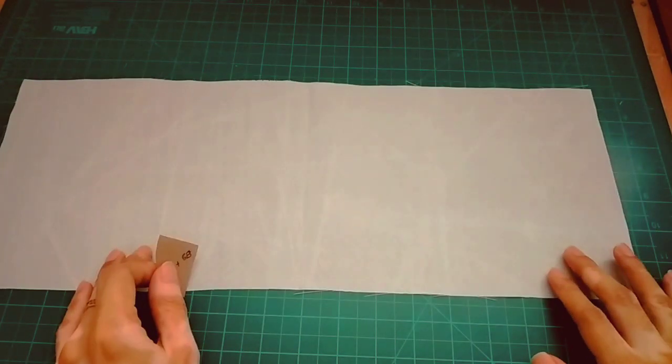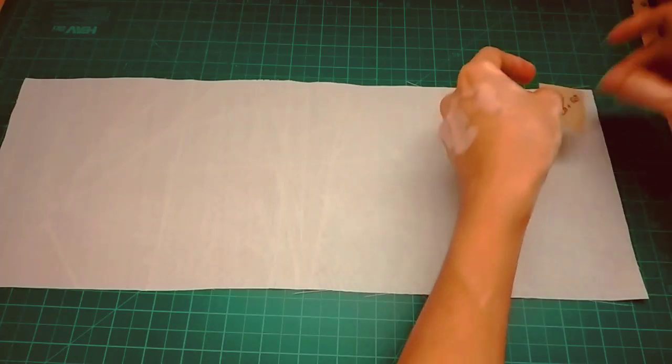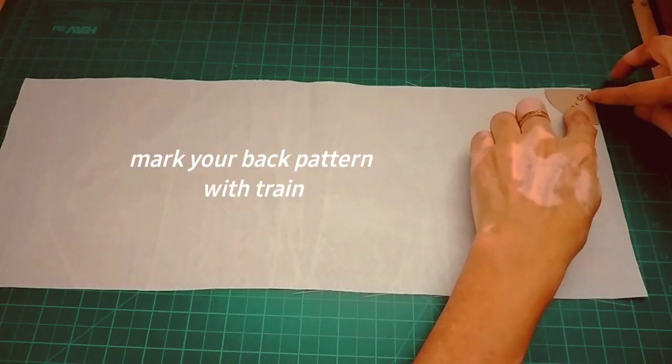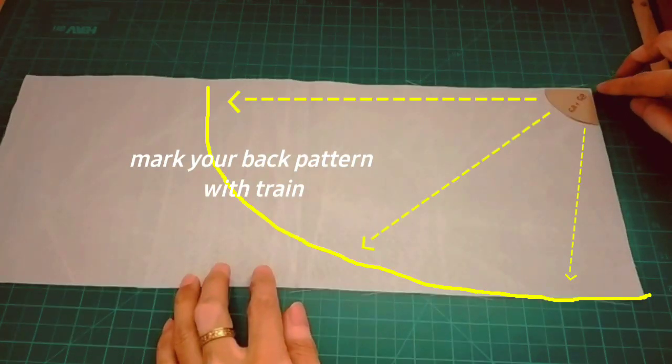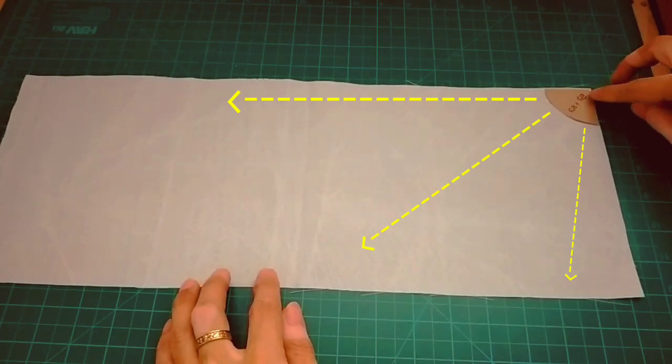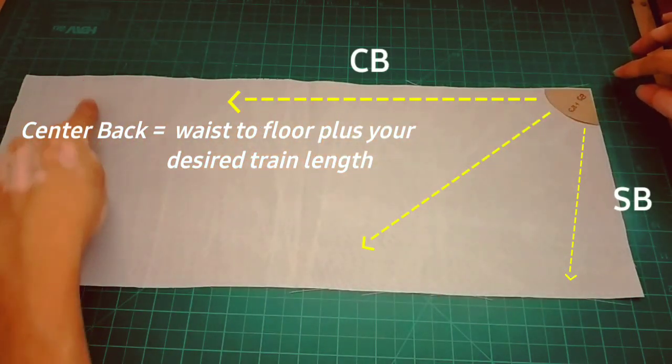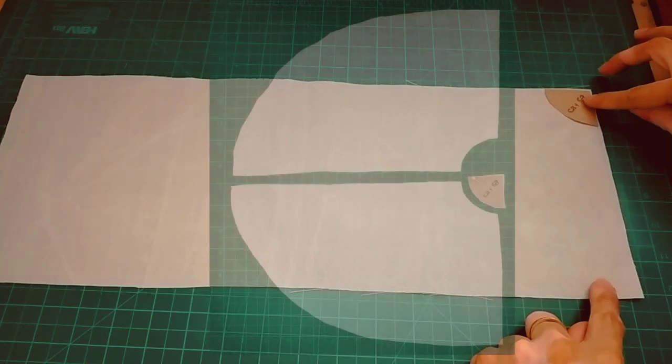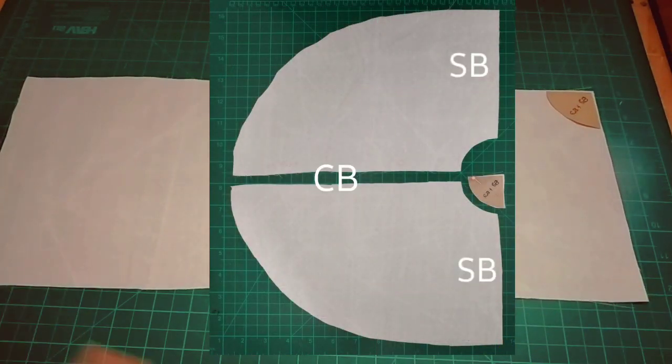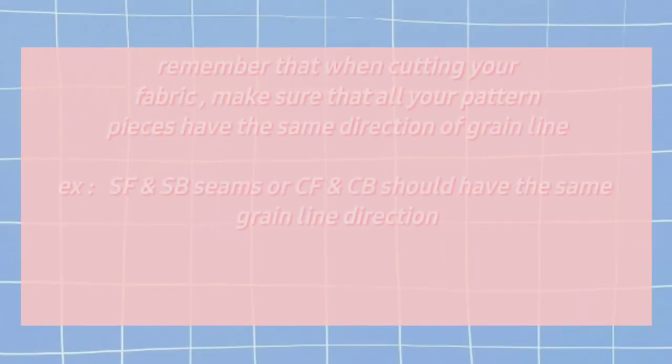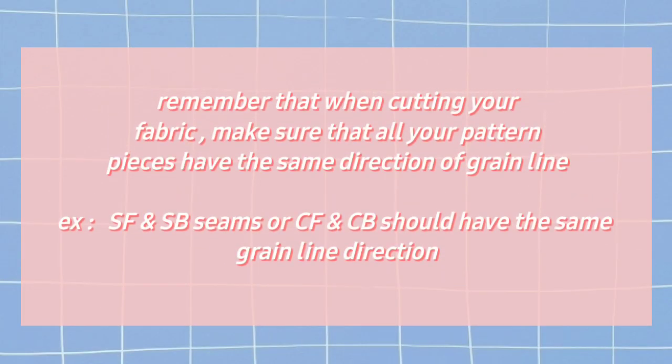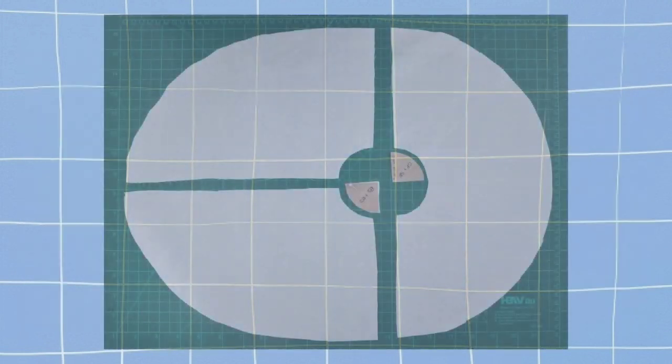This is how you lay the back pattern piece on the fabric. We have to cut two for this one, and you also have to consider the length of the train that you'll be adding. Aside from the waist to floor measurement, this is how it should look like after cutting all the fabrics.